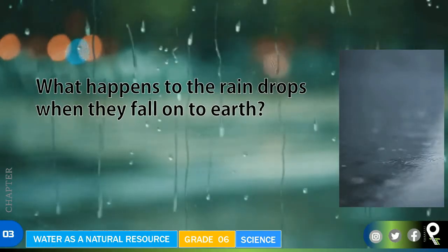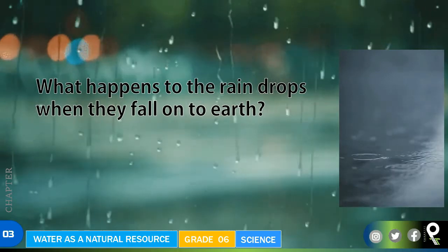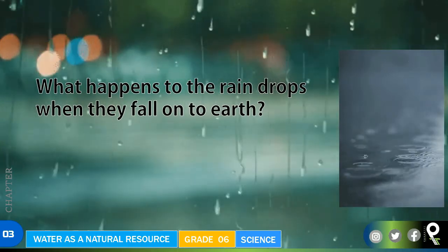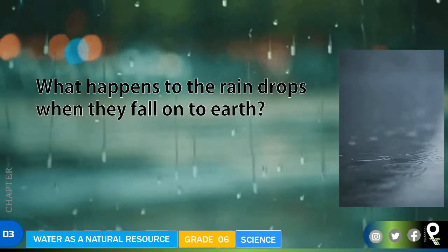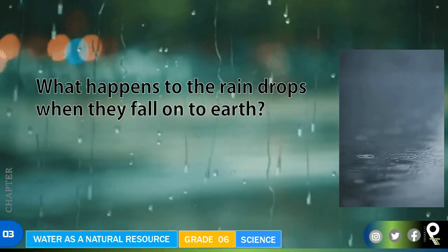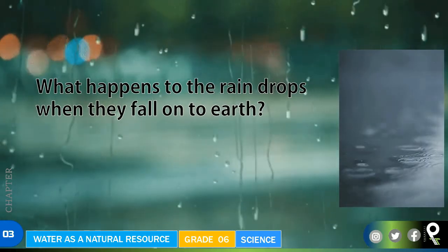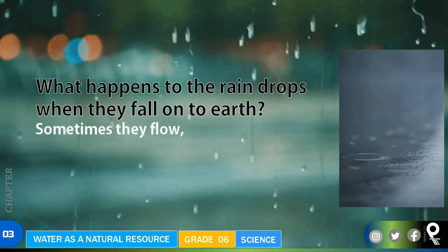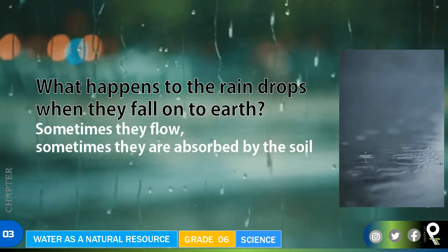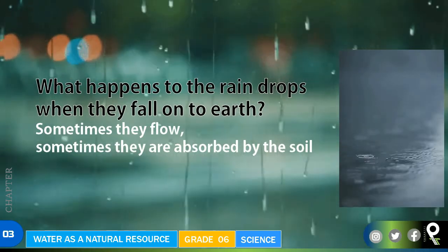What happens to the raindrops when they fall onto the earth? You play with little boats sometimes, don't you? Even when you were very small you used to make paper boats and keep them in the water and see them floating away. Sometimes the water flows, and sometimes it is absorbed by the soil.